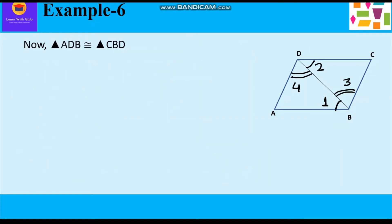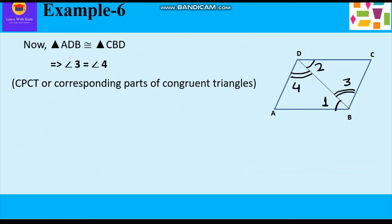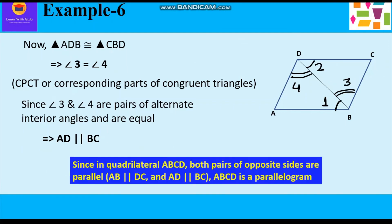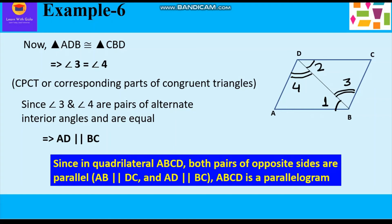Since we have proved congruency, we can say angle 3 is equal to angle 4 by CPCT — corresponding parts of congruent triangles are equal. Angle 3 and angle 4 are pairs of alternate interior angles and they are equal, so AD is also parallel to BC. Since both pairs of opposite sides are parallel — AB parallel to DC and AD parallel to BC — we can say ABCD is a parallelogram.